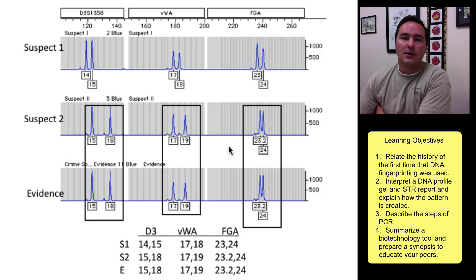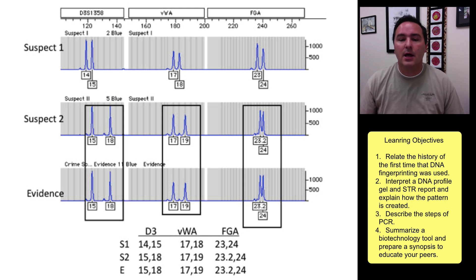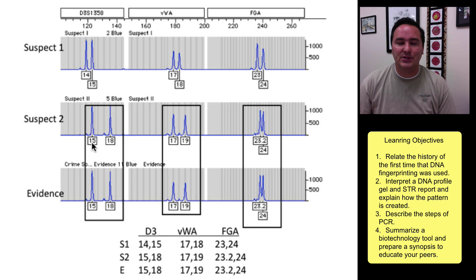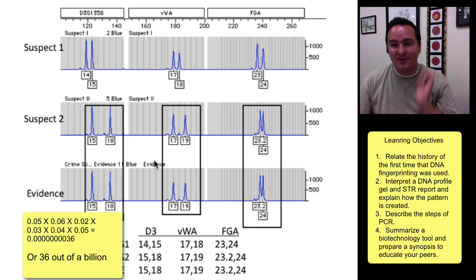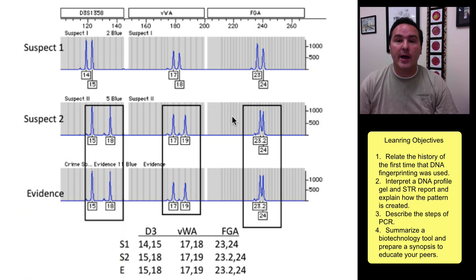You can also calculate the probability that this match occurred by chance — what's the probability that someone else would also have matched that evidence? There are powerful statistics for this. For example, what's the probability of getting 15? Maybe 5% of the population has 15 and 6% has 18. You multiply 5% times 6%, then multiply by the probabilities for the next markers — 2% times 3%, then 4% and 5% — and you multiply all of those probabilities together and end up with something really, really improbable. And that's just looking at three sites. Currently in the U.S., we use a system that has 13 sites plus recognition of whether the individual is male or female.